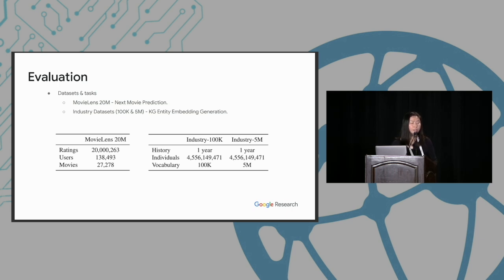And here comes the evaluation. We actually evaluate it on two different tasks. One is the next movie prediction on a public dataset MovieLens, and we also evaluate our method on the KG entity embedding generation on a real-world large-scale industry dataset. Note that for the KG entity embedding generation, we experiment with two variations of the dataset. One has 100K vocabularies, and the other has 5 million vocabularies. Basically, the vocabulary size decides the model size. So with these two variations, we can actually study how our algorithm performs on medium-scale to large-scale datasets and models.